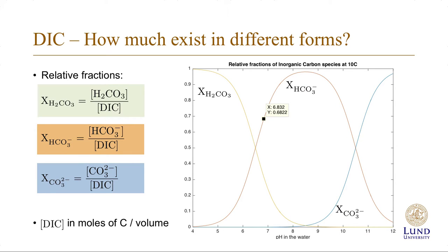We can use these curves to determine the fraction of a specific ion. For example, at pH 6.8, about two-thirds of the DIC is present in the form of bicarbonate.